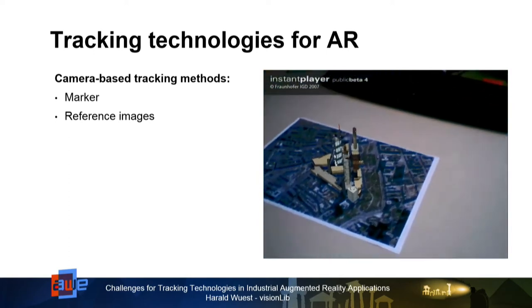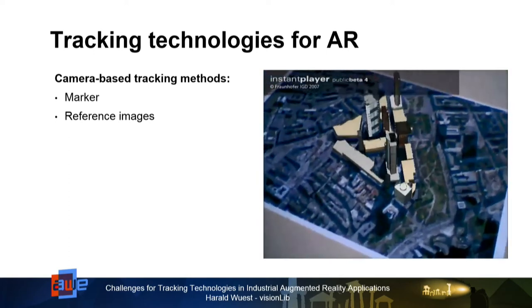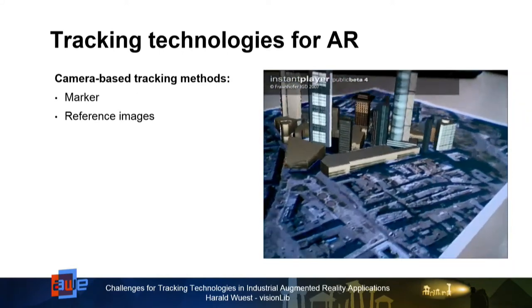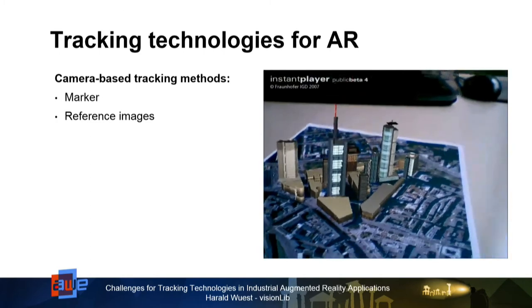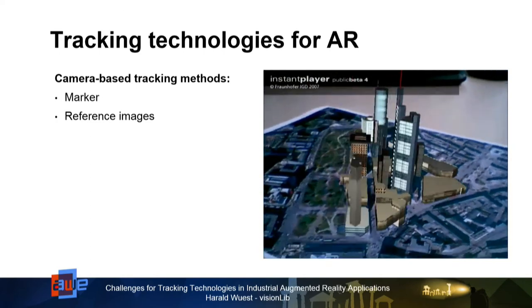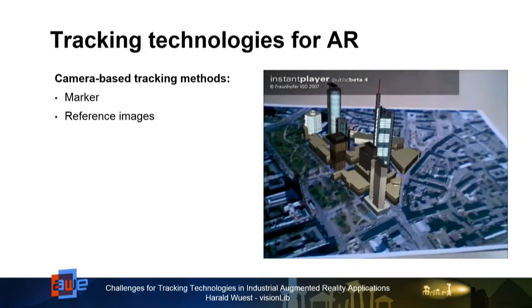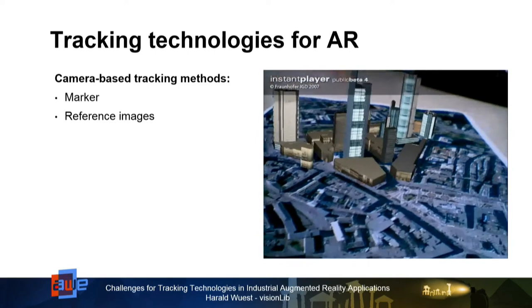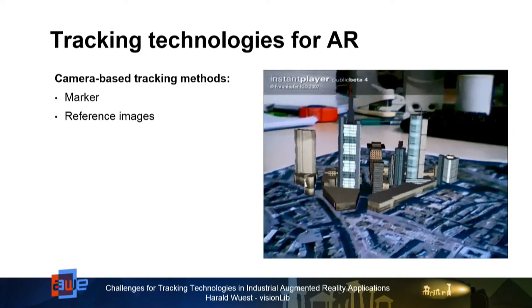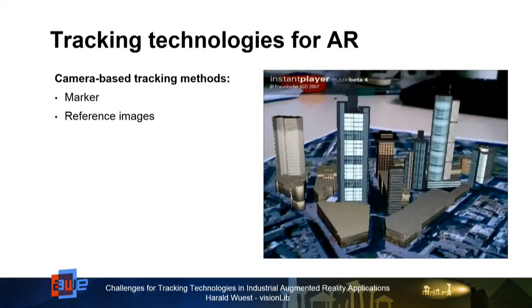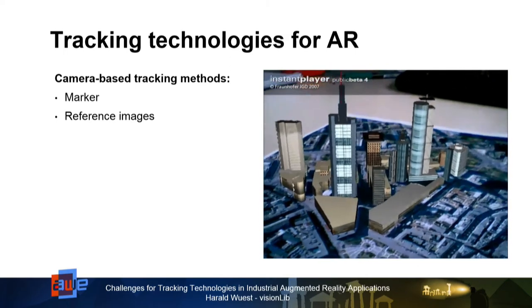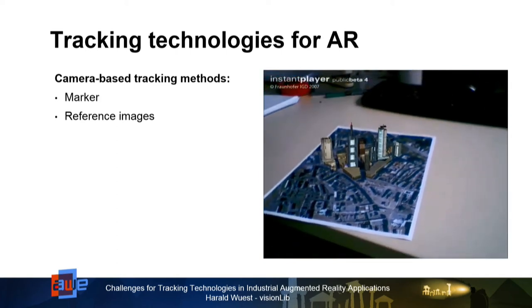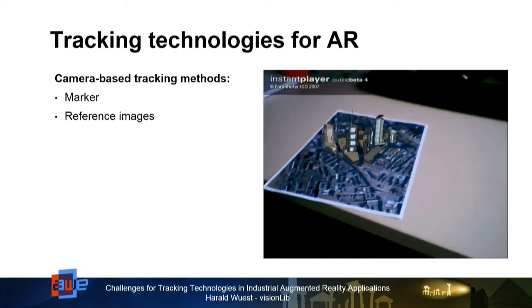The next step in the evolution was using reference images. This works pretty well — there have been lots of applications for marketing and sales where people use magazines to augment virtual content. This technically works well and people said, okay, we did that markerless, we don't have any markers anymore because it's all natural feature-based. But at the end, when you just take the reference image, it serves the same way as a marker — it's not really markerless because the reference image can also be regarded as a marker.